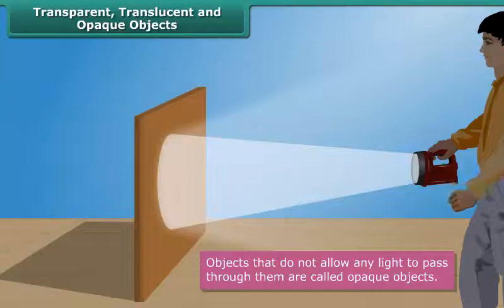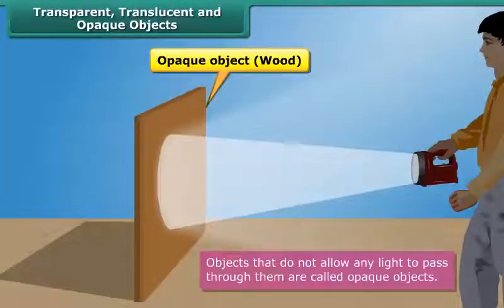Objects that do not allow any light to pass through them are called opaque objects. As a result, we cannot see through them.